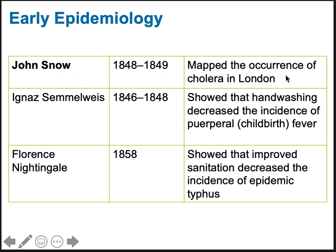John Snow, discussed in chapter one, mapped the cholera outbreak in London and showed that everyone getting sick was obtaining water from a particular pump. When they decommissioned that pump, cholera infections in London greatly reduced. This was significant because when they tested the pump, it didn't always show cholera bacteria — it was intermittently in the water, not present at all times.